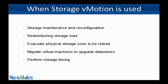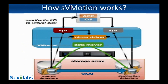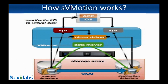Now let us understand how Storage vMotion works. The virtual machine working directory is copied by vSphere to the destination datastore. The working directory, also called the VM home folder, consists of the configuration file (VMX file), VM kernel swap files, log files, and snapshot files. First, vSphere performs a bulk copy of the disk contents from the source datastore to the destination datastore.